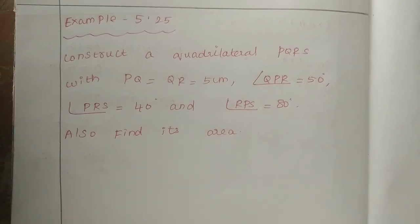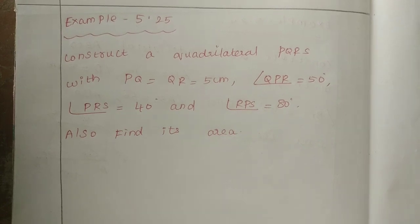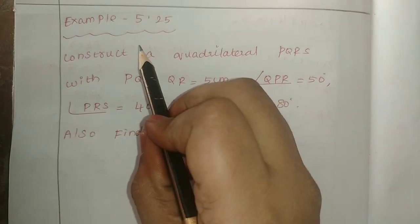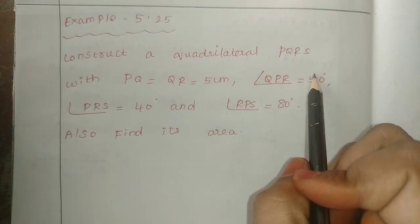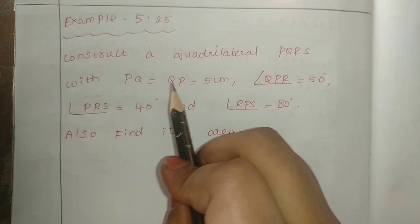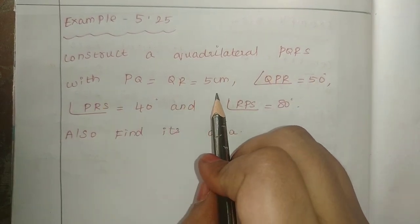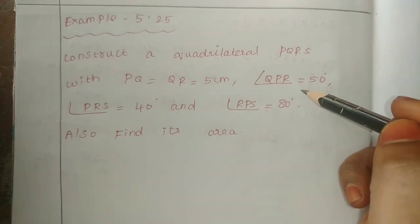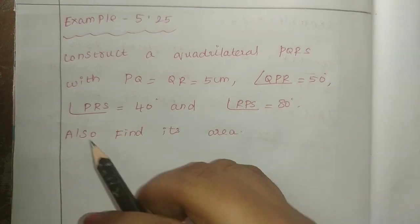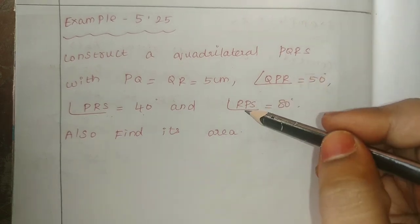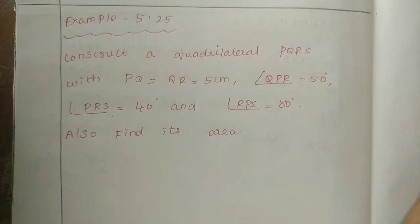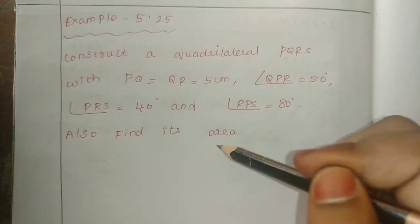Hello friends, I am Saranya. Today we will look at 8th standard maths, Chapter 5, Practical Geometry, Example Sum 5.25: construct a quadrilateral PQRS with PQ equal to QR equal to 5 centimeters, angle QPR is 50 degrees, angle PRS is 40 degrees, and angle RPS is 80 degrees. Also find its area.